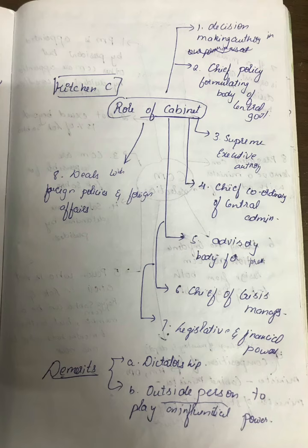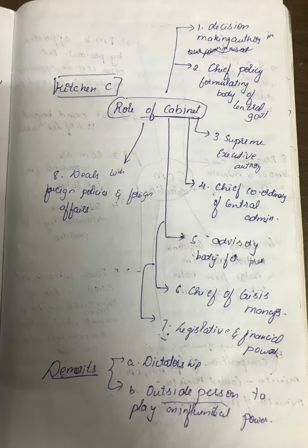Now let's quickly learn about the role of the cabinet. The same replica happens for state council of ministers at the state level too. If you understand the center properly, the state is very easy. The cabinet is also called the kitchen cabinet and the Westminster model of cabinet — it comprises very few members. In the cabinet we have finance minister, health minister, defense minister, education minister, and the prime minister presides over it.